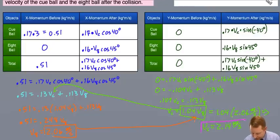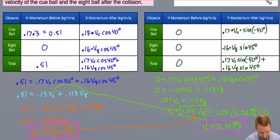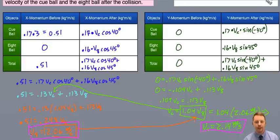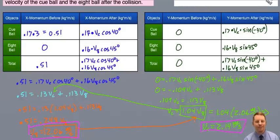So the velocity of the cue ball after the collision is 2.14 meters per second, and the velocity of the 8 ball is 2.06 meters per second, found using the law of conservation of momentum and keeping separate the x and y components. Hopefully this gets you started with analyzing collisions in multiple dimensions. For more help, check out aplusphysics.com. Thanks and make it a great day.